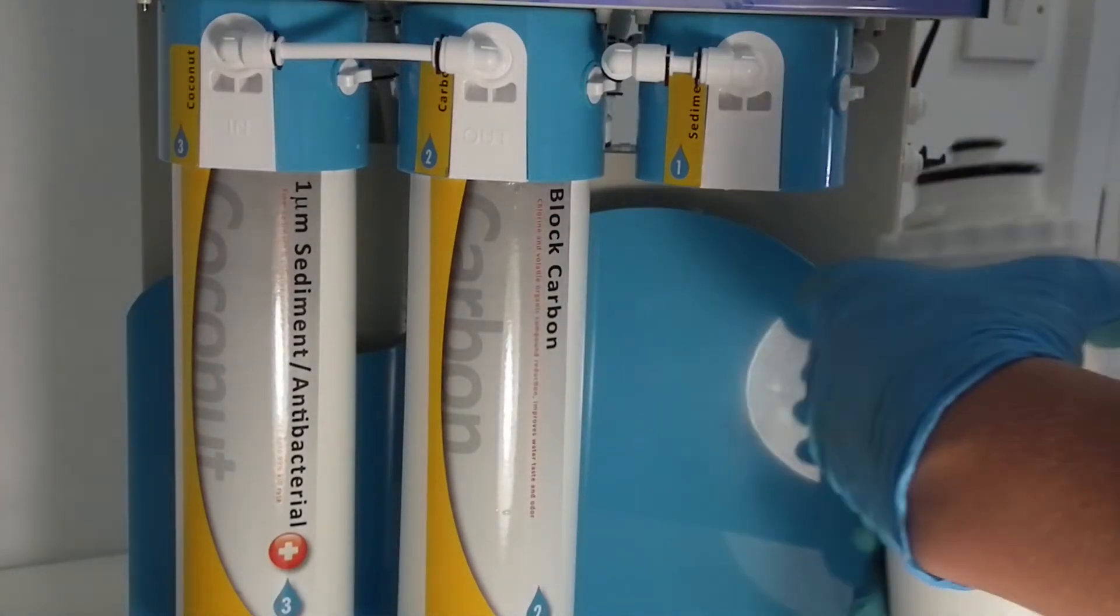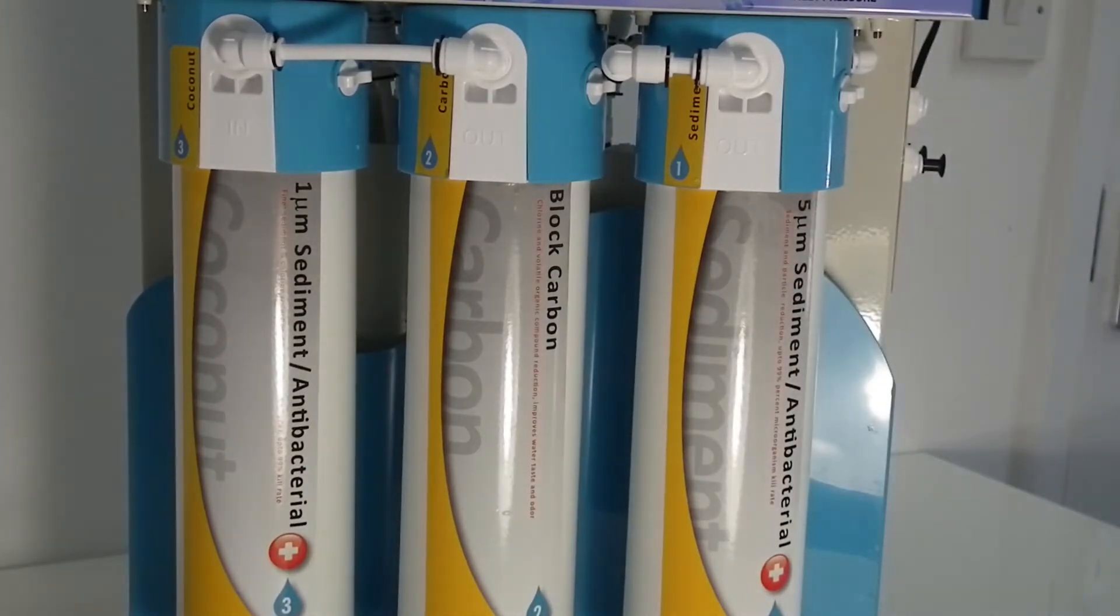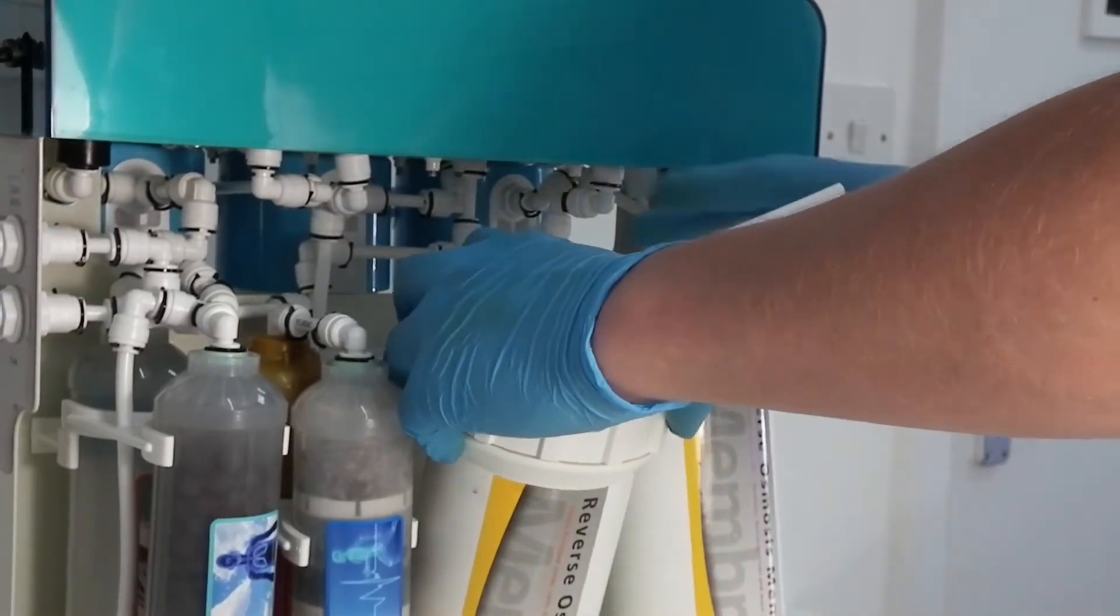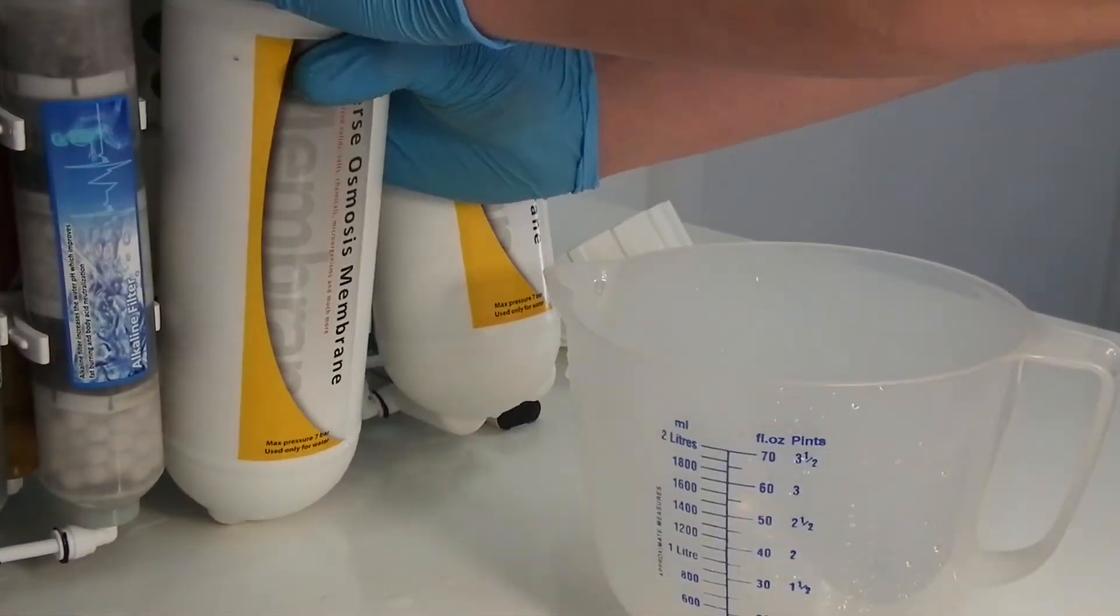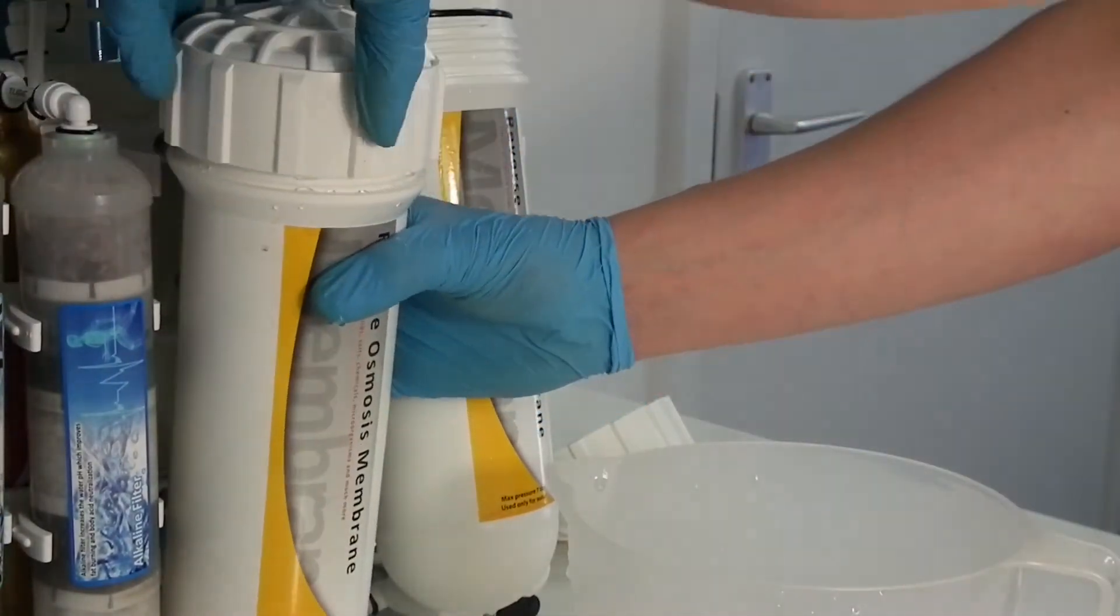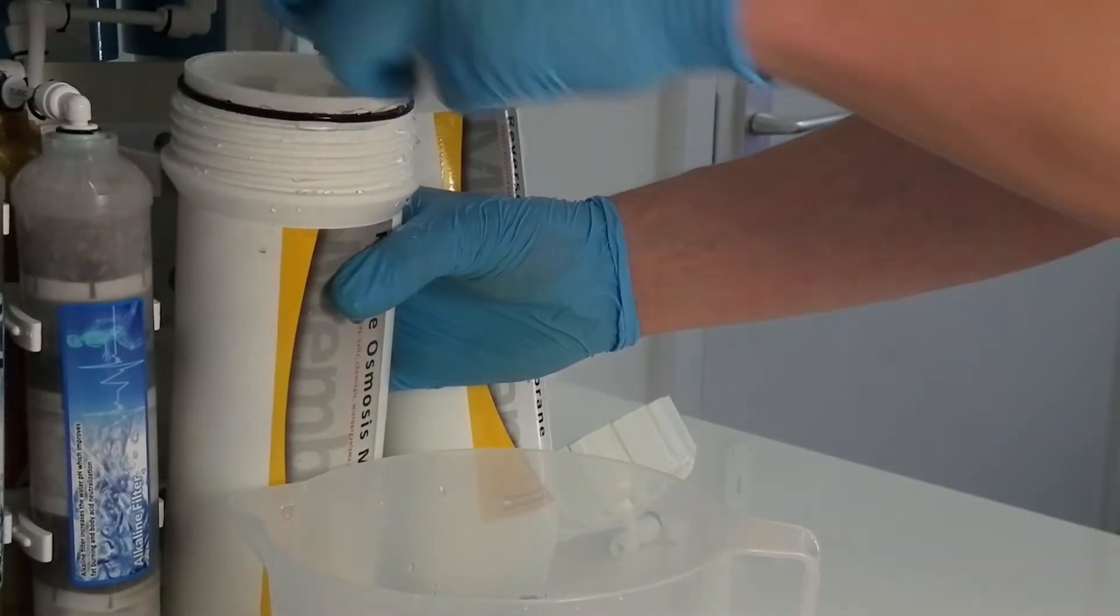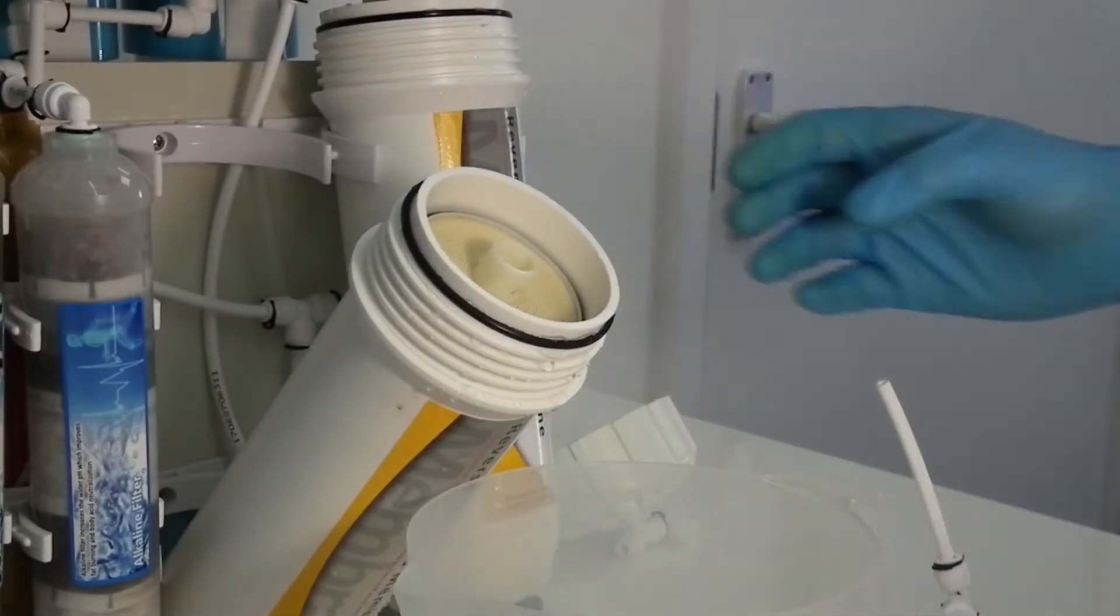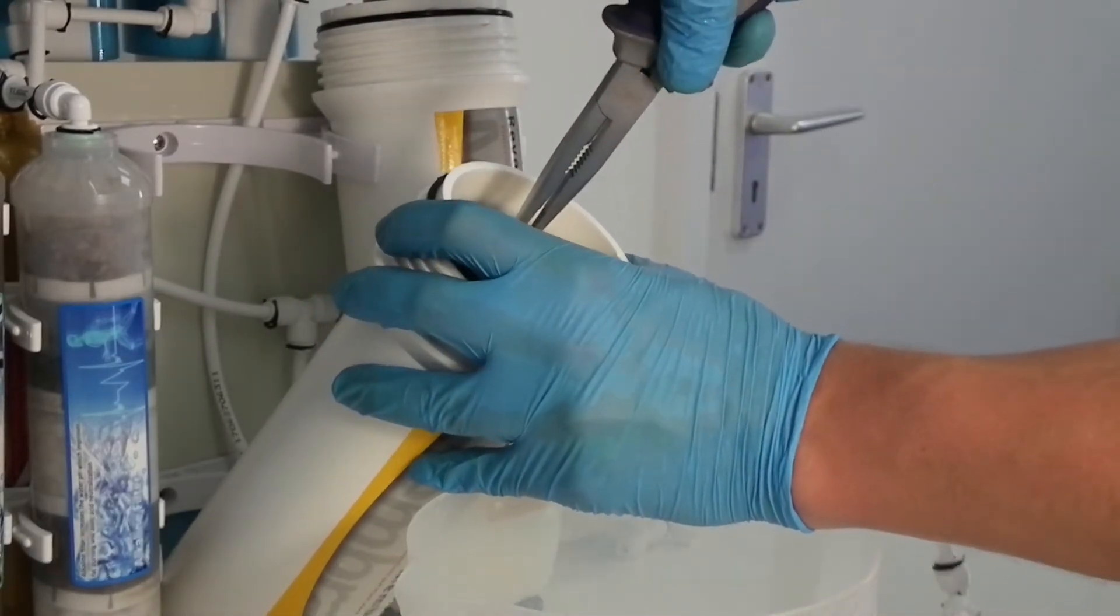To replace the reverse osmosis membranes, first remove the tubing from the membrane housing inlet elbow and pull the top of the membrane housing backwards. Twist the membrane housing cap counterclockwise to remove it. If the membrane housing cap is difficult to rotate, use the membrane housing wrench to assist. Once the cap is removed, have a jug or other similar object to pour out the excess water while removing the membrane. Use the needle-nose pliers to pull out the membrane from the housing.